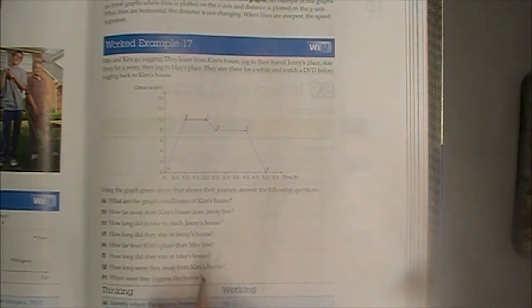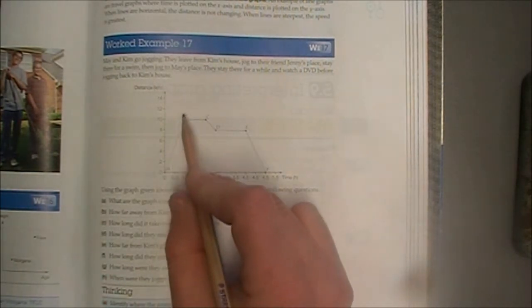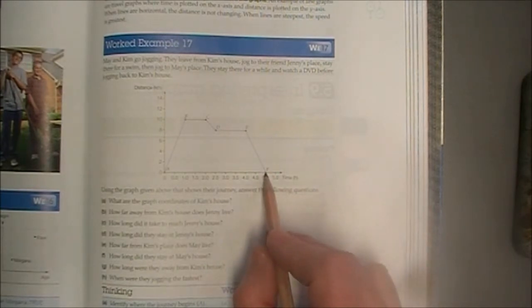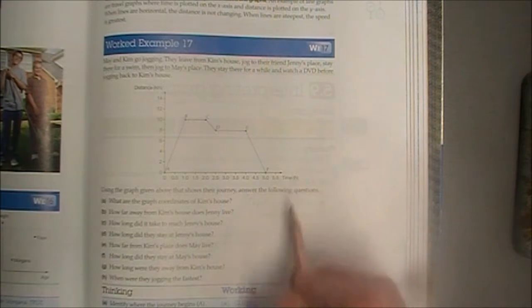How long were they away from Kim's house? So we started at Kim's house before we did all this jogging and so on. And this is the total time elapsed. 5 hours.